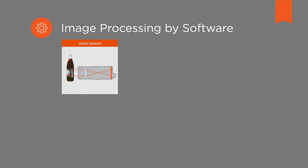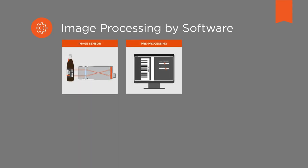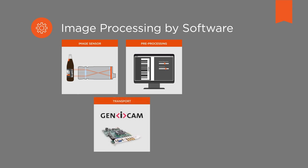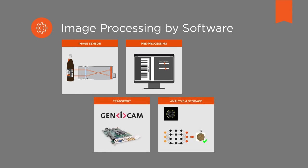In conclusion, digital image processing means image processing by software — from the control of the image sensor itself and the pre-processing of the acquired raw image data, through the transport of the image between different subsystems, and up to the analysis and storage. This takes place depending on the system structure within a camera or across several subsystems. We have seen the path of an image in digital image processing and the variety of possibilities that digital image processing creates. Let's use them. Thanks for watching.